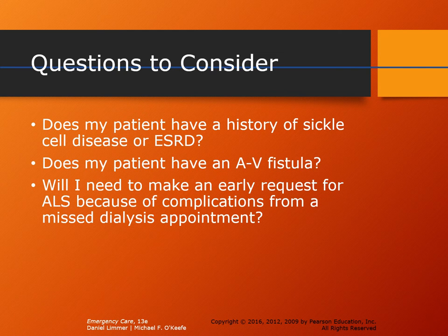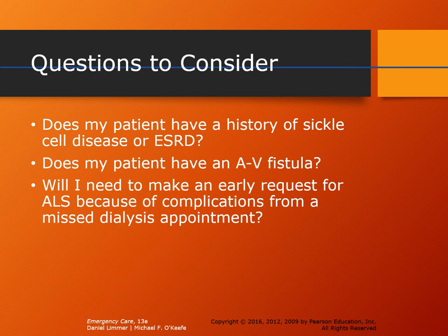Abnormal blood cells significantly affect a patient's health and ability to fight infection, recover from injuries, and maintain homeostasis. Renal failure can be acute or chronic, and ESRD is managed through dialysis. Key questions when dealing with a dialysis patient: Does my patient have a history of sickle cell or ESRD? Any history of anemia or medications like blood thinners inhibiting clotting? Does my patient have an AV fistula — and remember, it is always unacceptable to take a blood pressure on that arm. And finally: do I need to consult ALS?